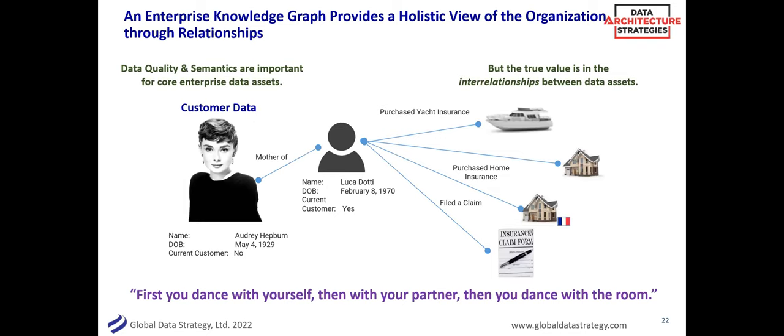A graph can present this holistic view of the organization through these relationships. Say you have a high-net-worth insurance company insuring someone like an Audrey Hepburn for her mansion in France, her mansion in Aspen, her yacht — and she filed a claim because her yacht windows broke. You really want to understand that customer: what assets they own, who they're related to — those graph patterns. You might discover that a customer named Luca Dotti, born in 1970, is her son. You might not have realized that without these graph patterns.